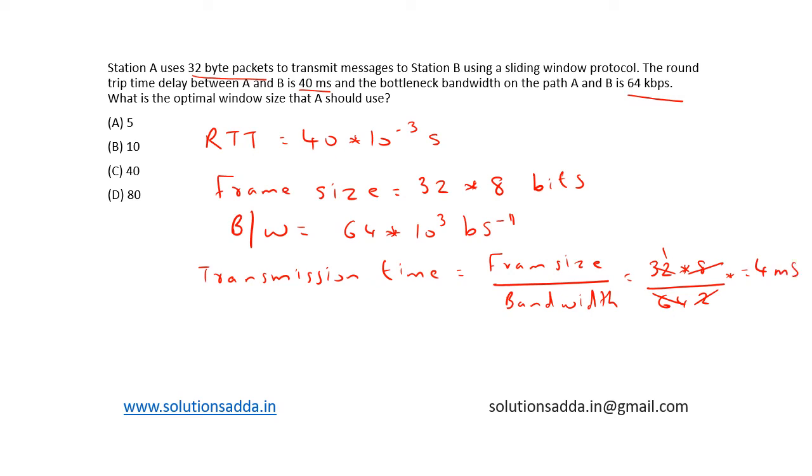Now let's consider the window size as N. N is the window size. Now utilization eta is equal to N by 1 plus 2A, where A is equal to propagation time divided by transmission time.